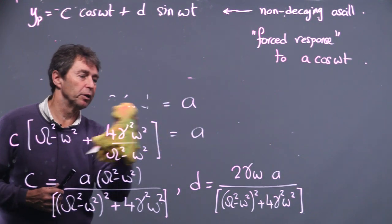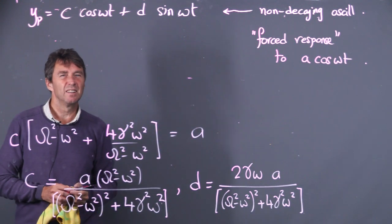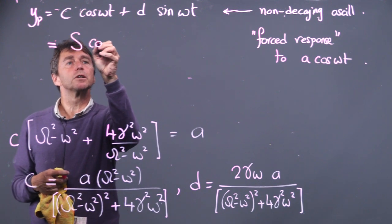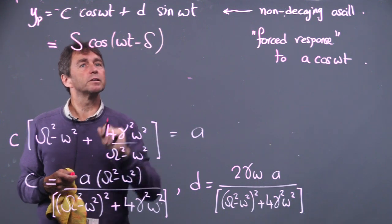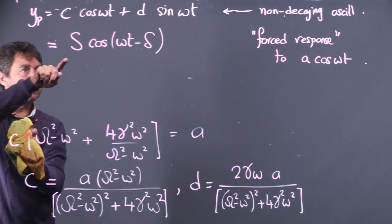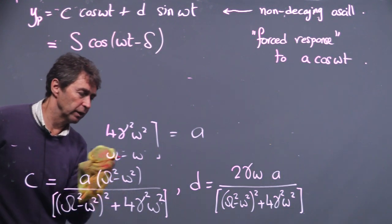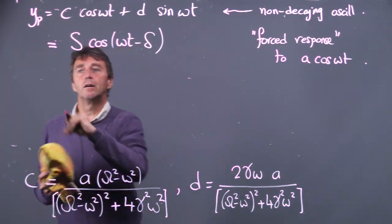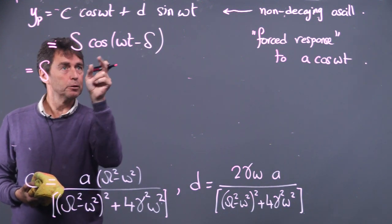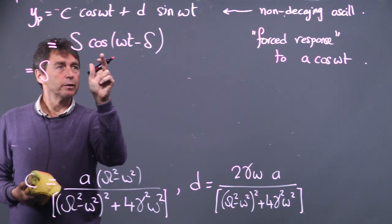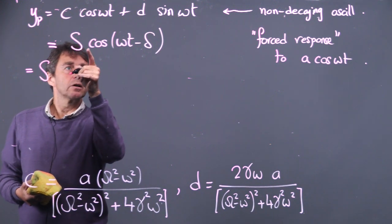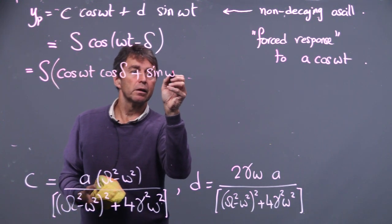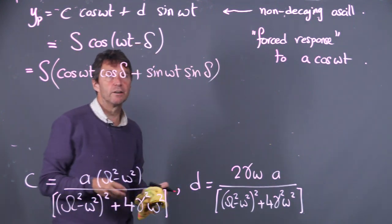It's often helpful to rewrite c cos(ωt) + d sin(ωt) in amplitude-phase form: S cos(ωt − δ). To do this, use the trig identity cos(A − B) = cos A cos B + sin A sin B. So S cos(ωt − δ) = S cos(δ) cos(ωt) + S sin(δ) sin(ωt). Matching coefficients, S cos(δ) = c and S sin(δ) = d.